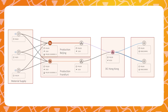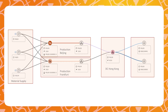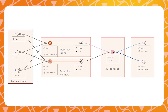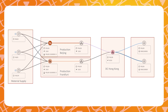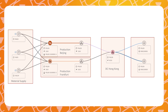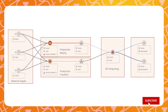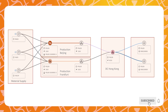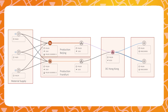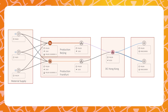For this video, we are going to look at a Small Network in SAP IBP. On the left, we see that multiple materials are being used to create finished goods in Beijing as well as in Frankfurt. In this example, both of these locations are able to create the same product, and our distribution center in Hong Kong is the recipient of this product.